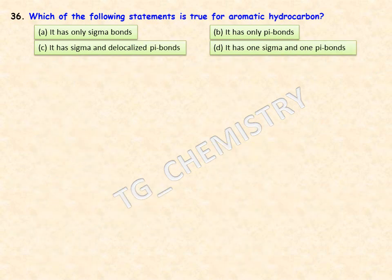Which of the following statements is true for aromatic hydrocarbons? Options are: it has only sigma bonds; only pi bonds; sigma bonds and delocalized pi bonds; or one sigma and one pi bond. For a compound to be aromatic, it needs delocalized pi electrons, so option C — sigma bonds and delocalized pi bonds — is the right answer.